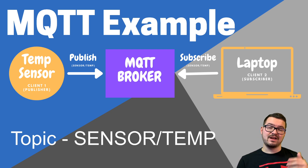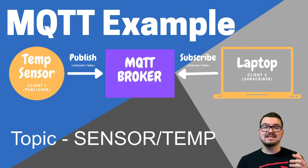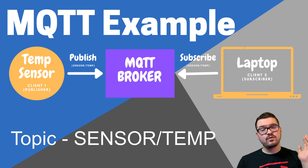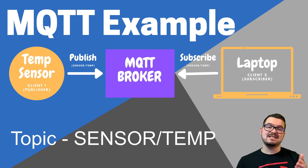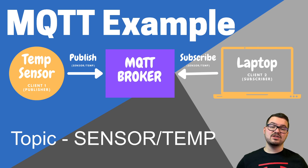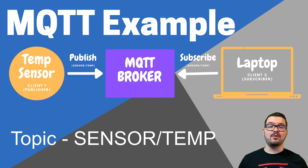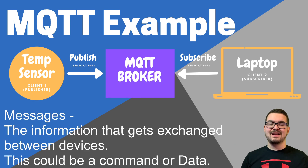Topics are denoted by a string followed by a forward slash. In the above example, the topic is sensor/temp. Each forward slash represents a different topic level, so here the top level is sensor and the second level is temp. Another thing to note: topics are case sensitive, so you could have two topics with the same names but one using uppercase and one using lowercase.